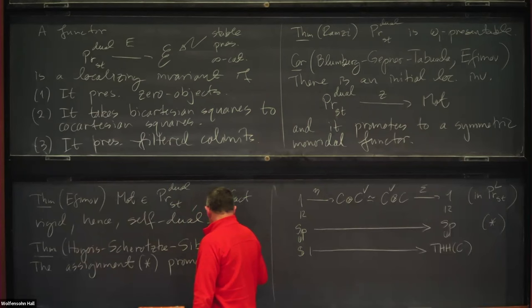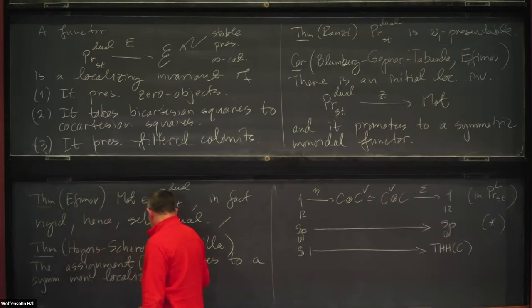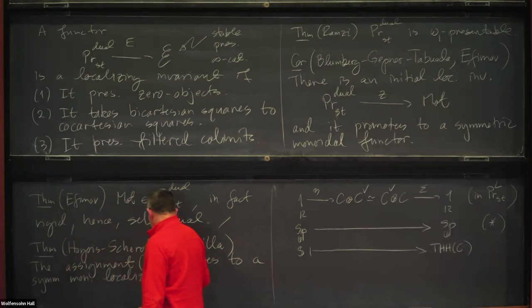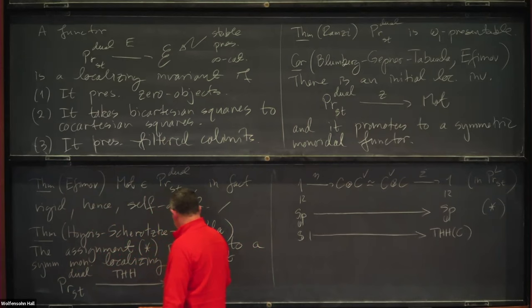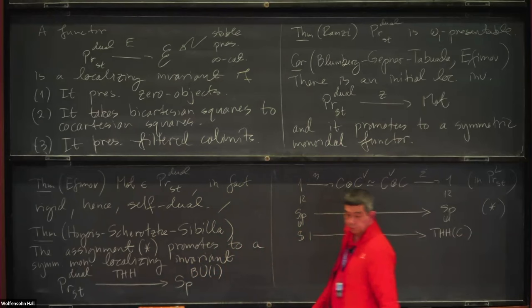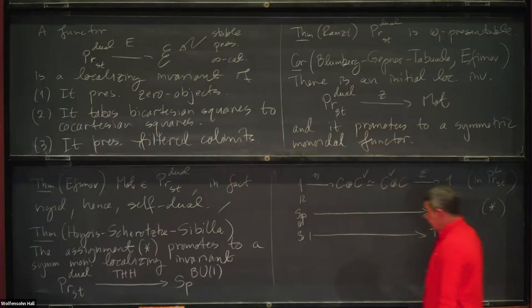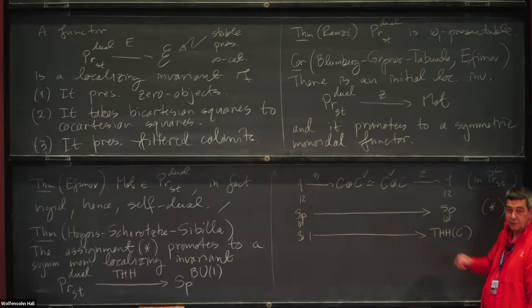And so maybe I can do it like this. So this promotes to a symmetric monoidal of localizing invariant. Localizing invariants from dualizable stable infinity categories to spectra with an action of the circle group U1. There's more structure here. There's also the Nikolaus-Schulze-Frobenius. I don't know if the analog of this has actually been written anywhere, at least that it promotes to a cyclotomic spectrum.